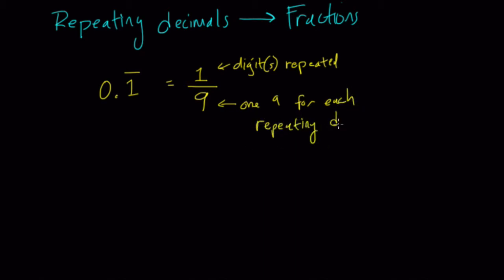All right, and I'll show you some more examples. 0.2 repeating, that would be 2 ninths. 0.3 repeating, that would be 3 over 9, or as you probably recognize it, 1 third.